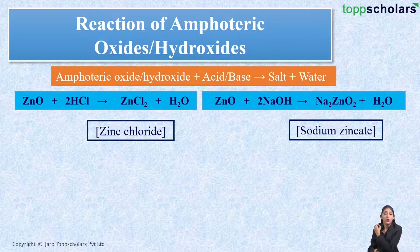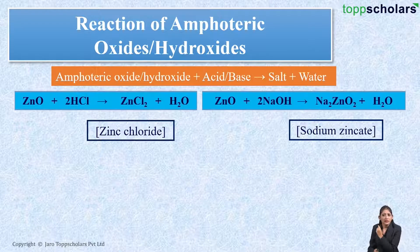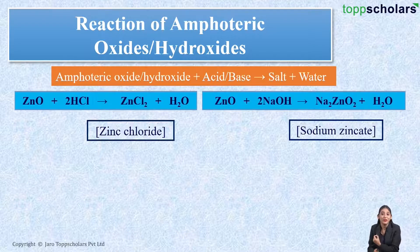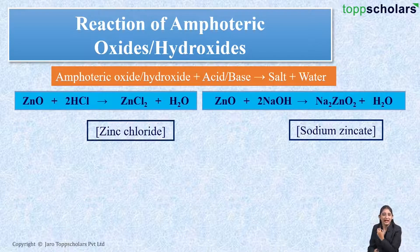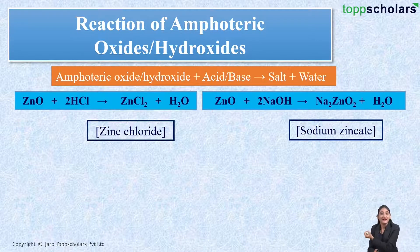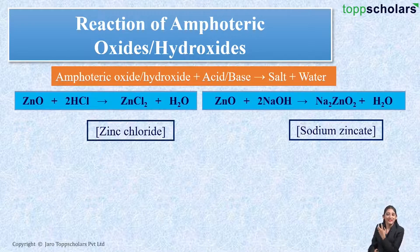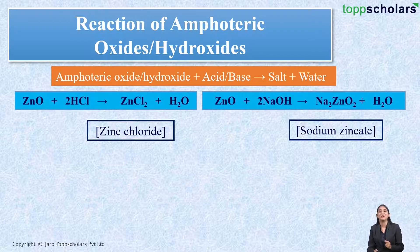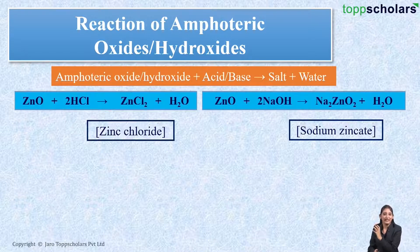Now here you can see that the same metal oxide, zinc oxide, reacts with a base — sodium hydroxide — to give salt, that is sodium zincate, and water. Since zinc oxide reacts with a base, zinc oxide behaves as an acid. So zinc oxide when it reacts with an acid behaves as a base, and when it reacts with a base it behaves as an acid.